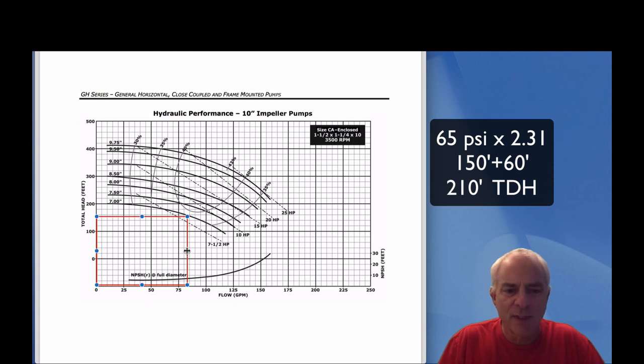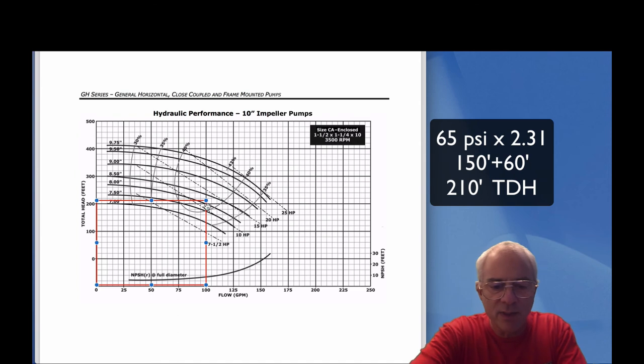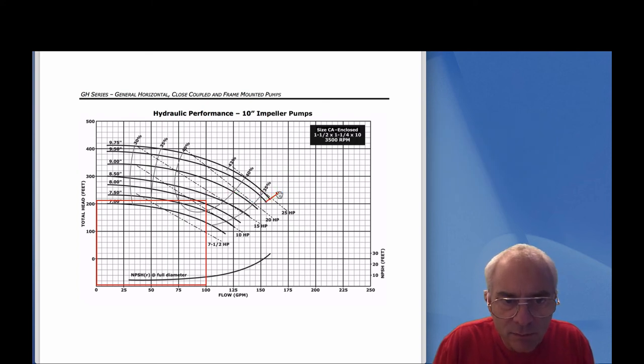We want to be at 100 gallons a minute and our total dynamic head is 210. These increments are about 10 each, so 220 is going to be a little bit less, right around there. We're smack dab in the middle. We're going to put the arrow at our duty point right here.